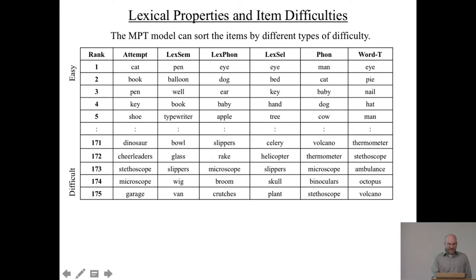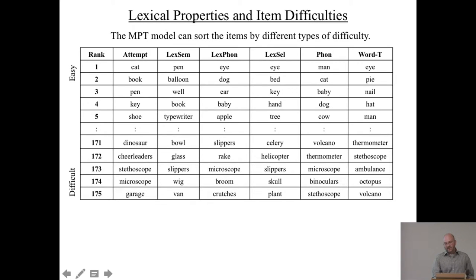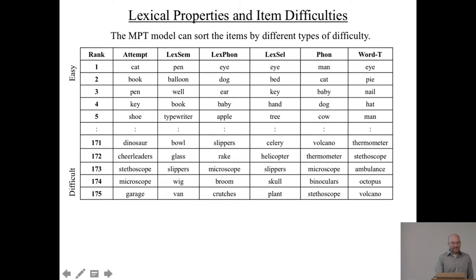For phonological production, man, cat, baby, dog, and cow are super easy to say — they just roll off the tongue. Volcano, thermometer, microscope, binoculars, and stethoscope are much harder. The last difficulty is the probability that a single phoneme change results in a real word. Easy words here — like 'eye' and 'pie' — have lots of phonological neighbors. Very unlikely to get another word if you change a phoneme in thermometer, stethoscope, ambulance, octopus, or volcano. There are just not many words that sound like those — they are very unique-sounding words.